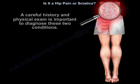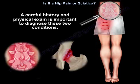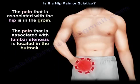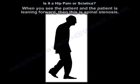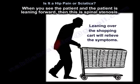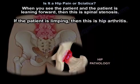A careful history and physical exam is important to diagnose these two conditions. The pain associated with the hip is in the groin, while the pain associated with lumbar stenosis is in the back. When you see the patient, if the patient is leaning forward, that's spinal stenosis. If the patient is limping, that's hip arthritis.